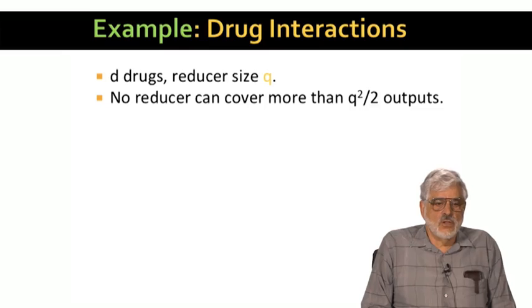First, the critical observation in all lower bound proofs is to put an upper bound on how many outputs a reducer can cover. In this case, the reducer gets Q drug records as inputs. The only outputs it can cover are the pairs of drugs that it has received. There are Q choose 2 of these, which I'm going to approximate as Q squared over 2. Technically, the exact number is Q times Q minus 1 over 2. But for large Q, there is negligible difference.